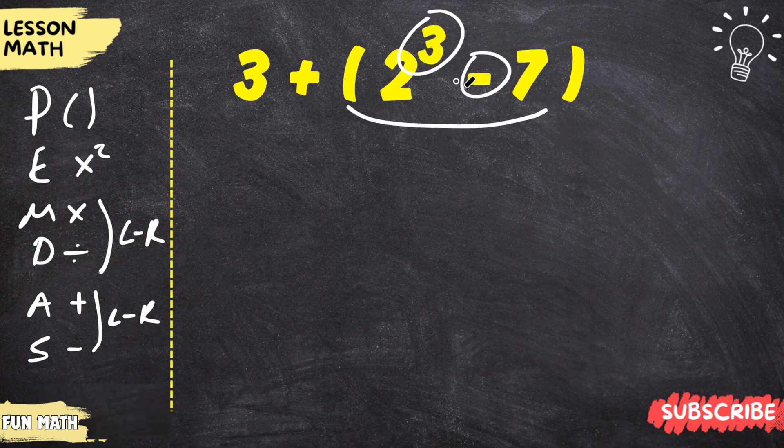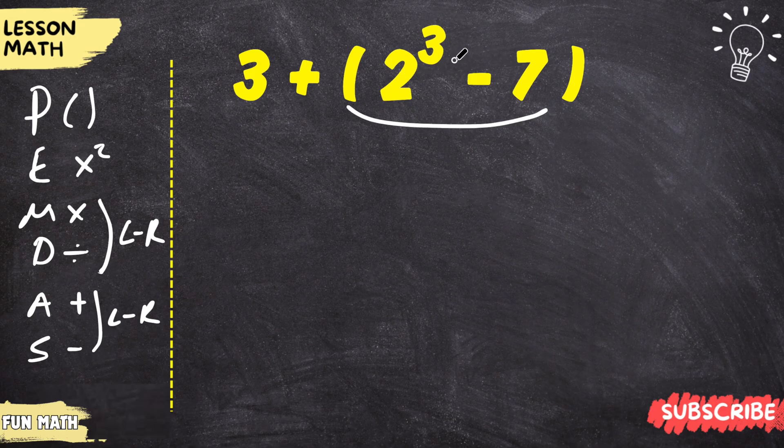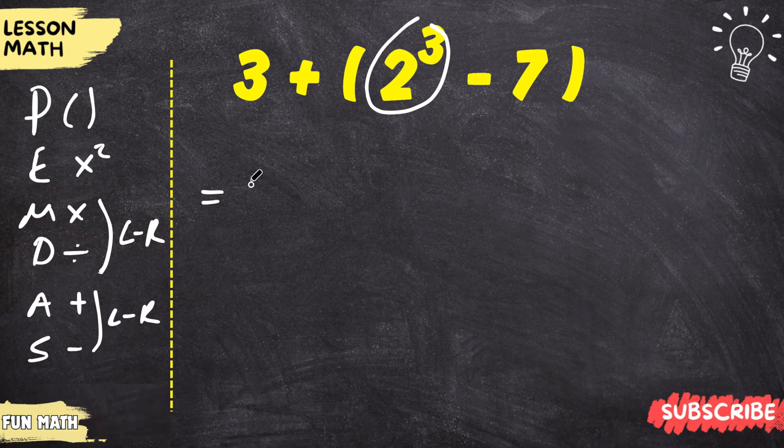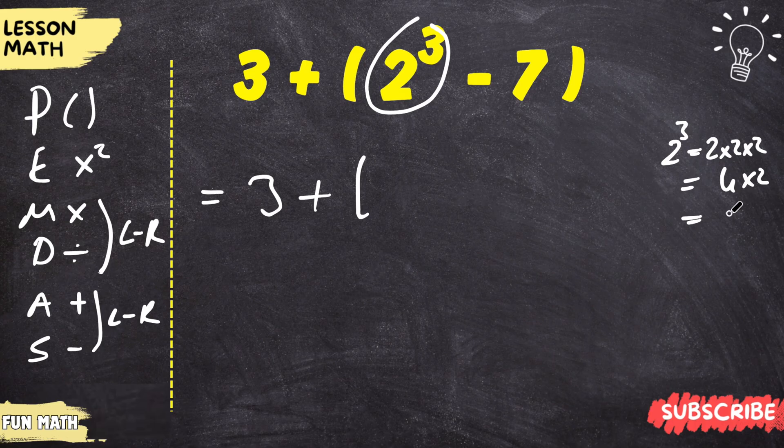Within the parentheses, the exponents are used first. Let's find the exponents. 2 to the 3rd power, 2 times 2 times 2 equals 8.